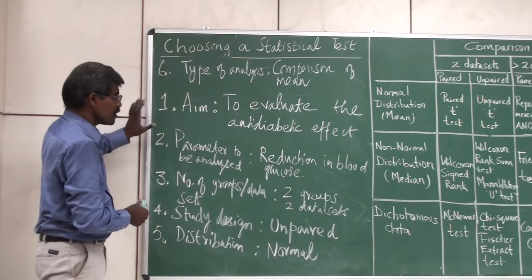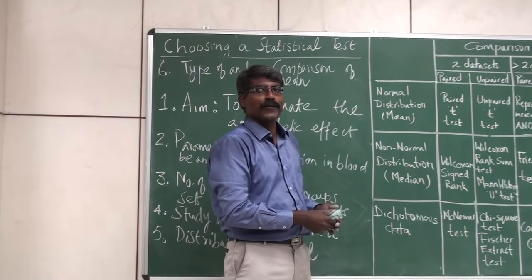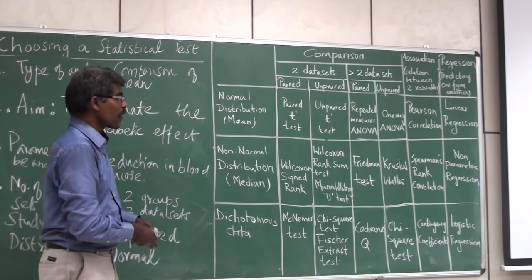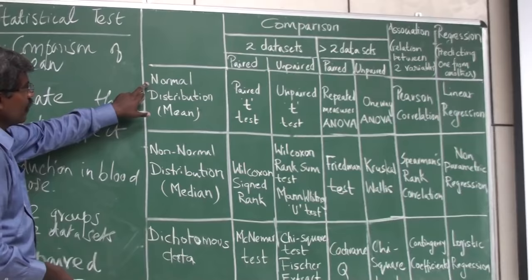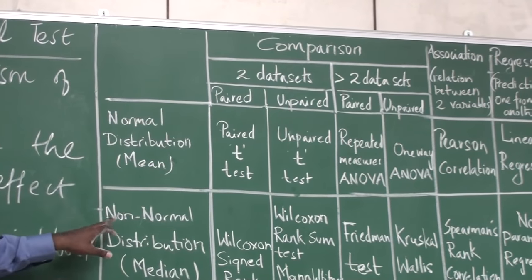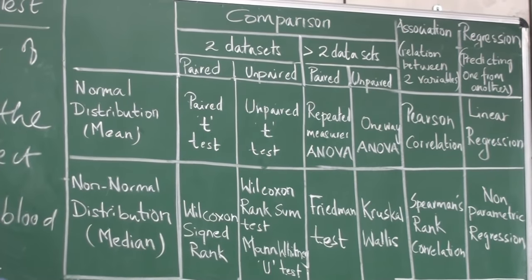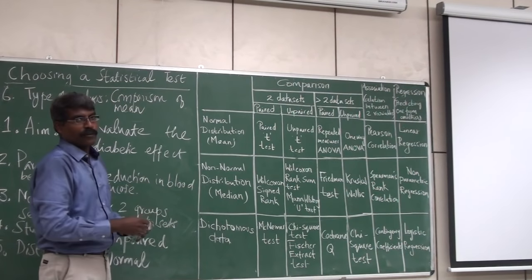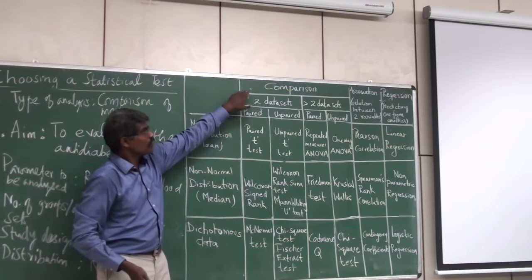Once you have done that, let's look at a simple table from the book 'Practical Approach to Postgraduate PG Dissertation.' This table has three rows: row one is normal distribution with comparison of means; row two is non-normal distribution with variables summarized as medians; row three is dichotomous data summarized as proportions. The columns represent three major types of analysis: comparison, association, and regression.